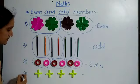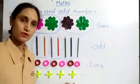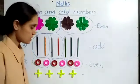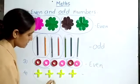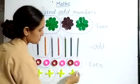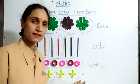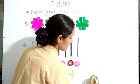Now here 1, 2, 3, 4. These are the 4 objects. Now again we have to group them into 2. 1 and 2. Here also nothing is remaining. So this is also even.